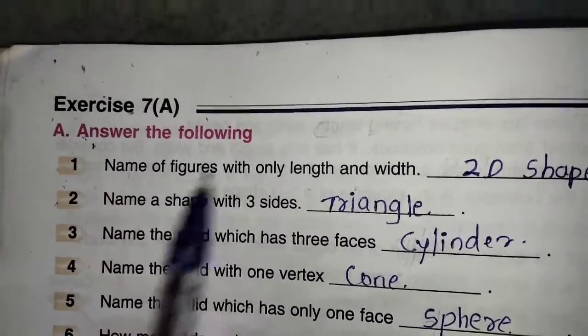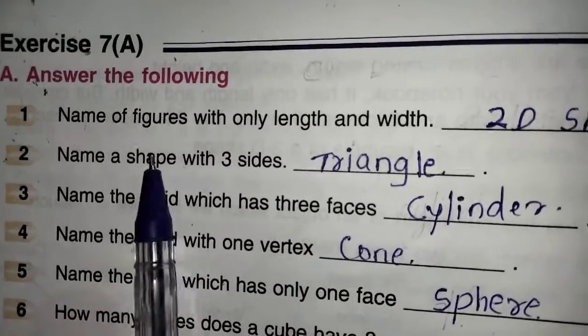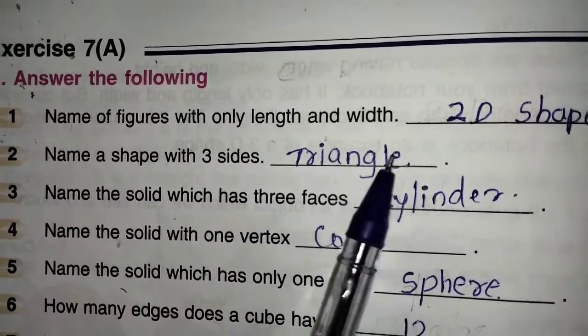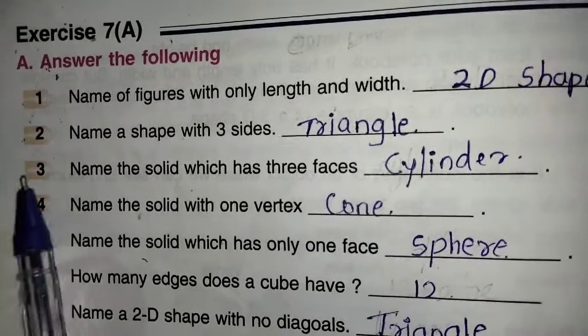Answer the following. First one, name of figure with only length and width. It is known as a 2D shape.